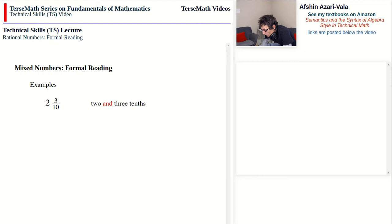If a mixed number is negative, then we precede the reading of it with the word 'negative.' So we read this as negative 2 and 3 tenths.